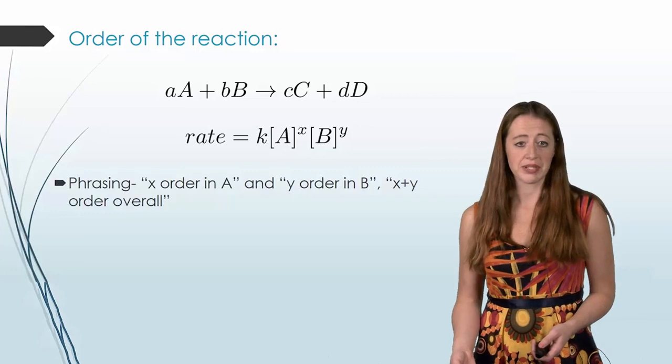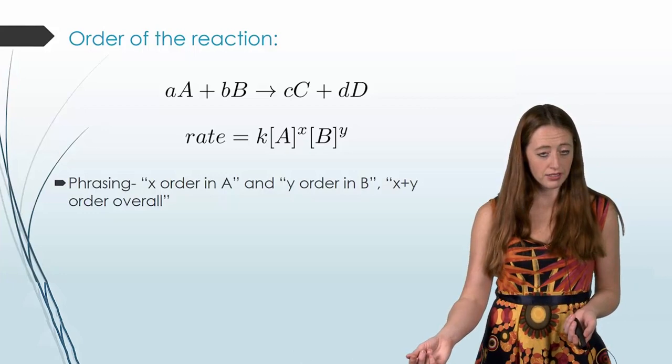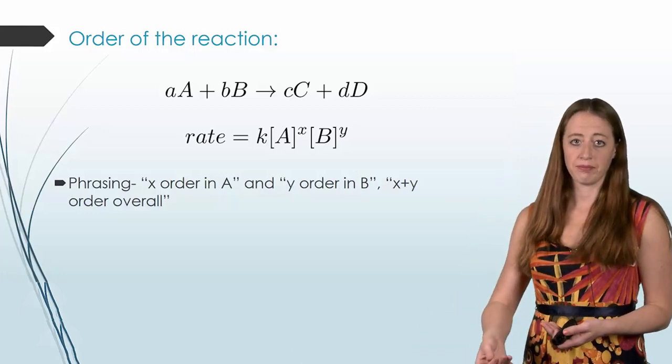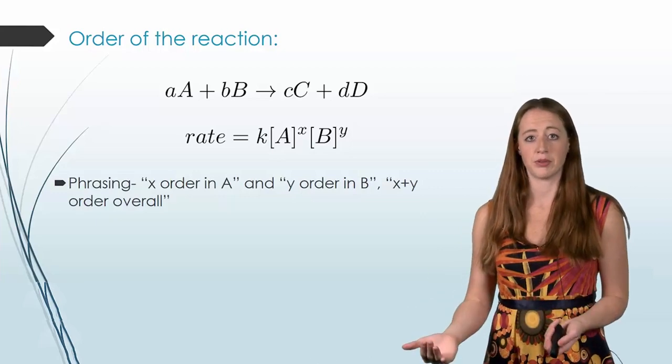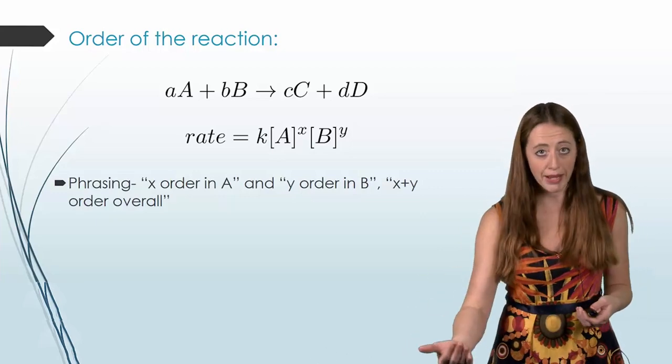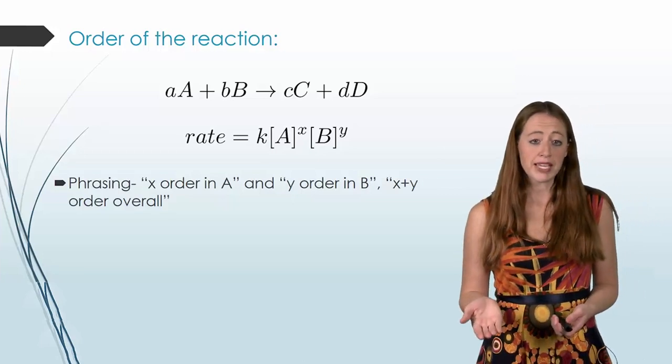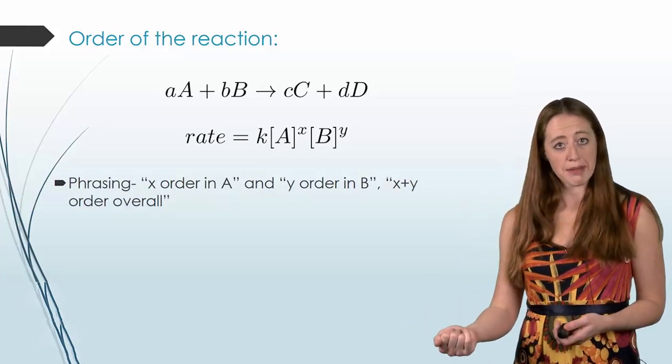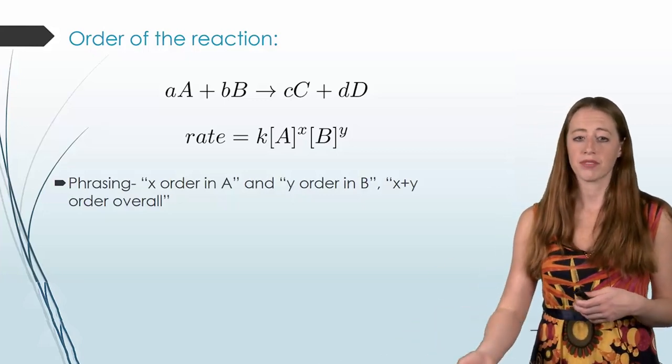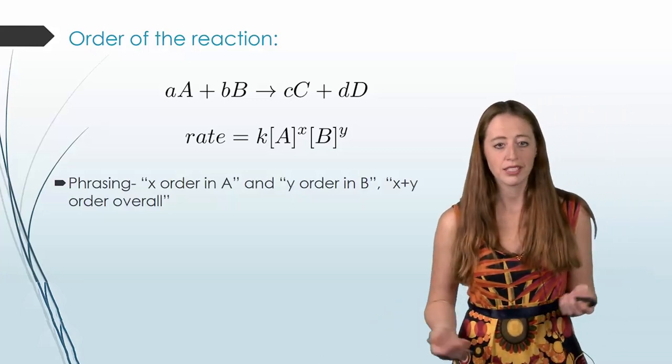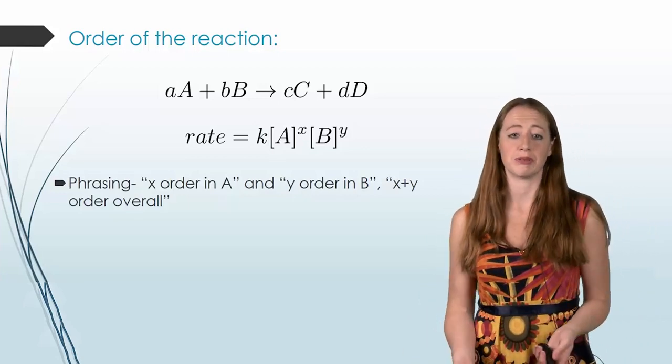For this reaction, we would say that it is x order in A. So x is the exponent on A, so it's x order in A. If that was A to the second power, we would say it was second order in A. If it was A to the third power, we'd say it was third order in A. And then for B, B is raised to the y power, and so we say it is y order in B. So if y was equal to 5, we would say it is fifth order in B. If y is equal to 1, we would say it is first order in B.